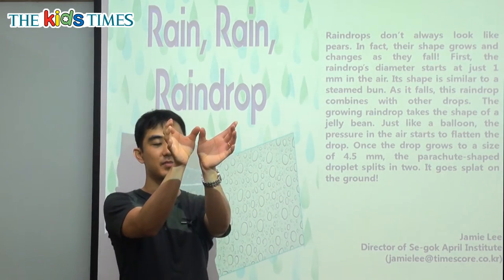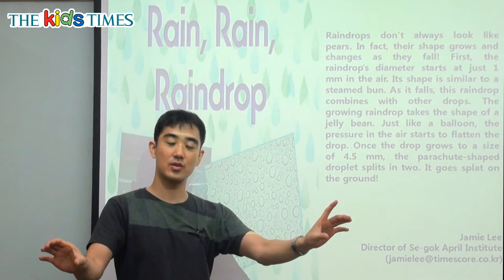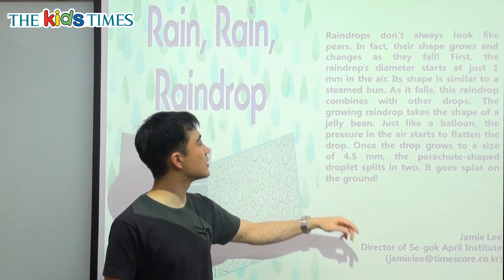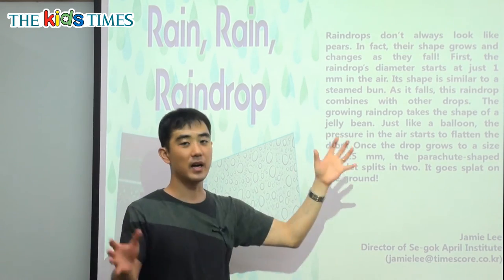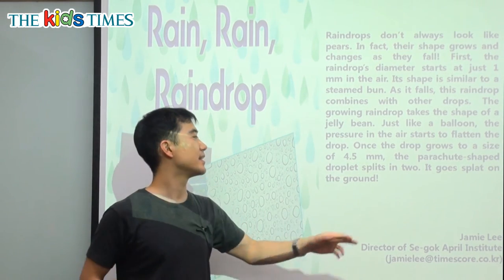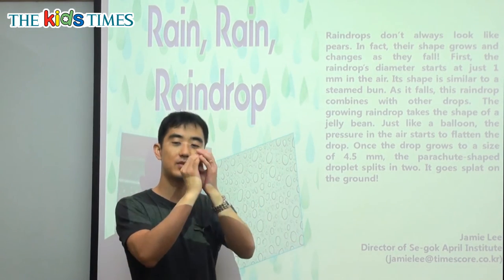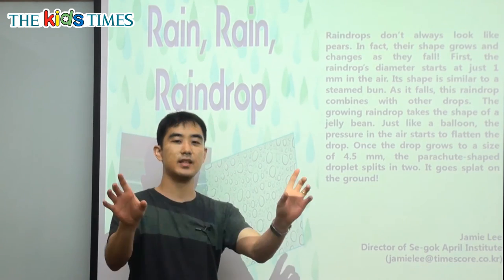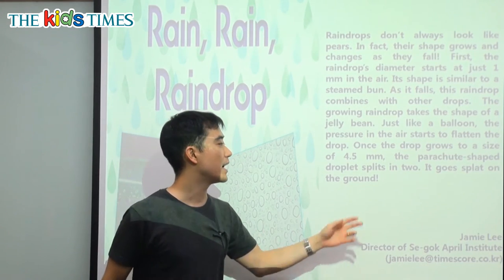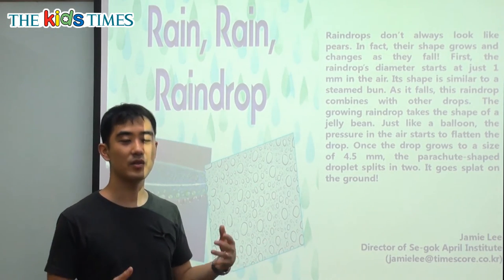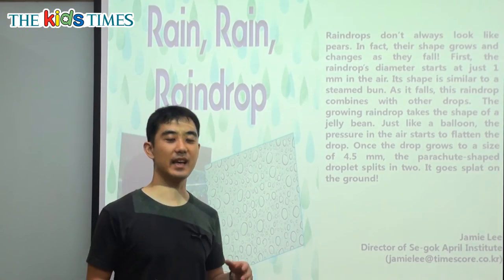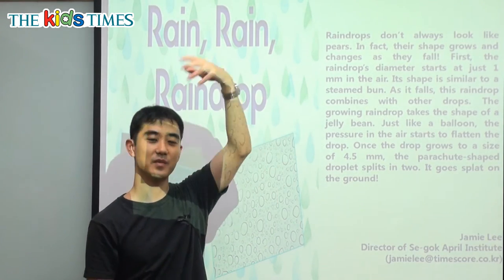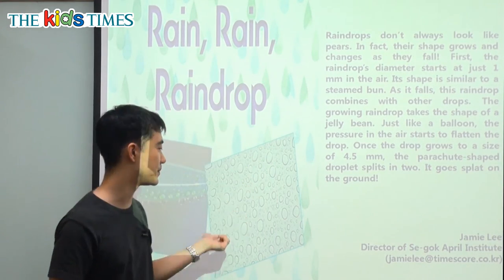The parachute droplet splits — splits means it's one but it turns into two. First it combines into bigger drops, and then when it becomes too big, it splits into two and goes splat on the ground. That's the entire journey from the cloud to the ground.